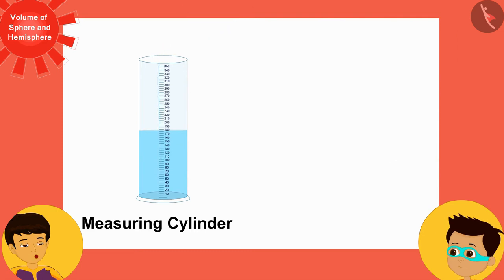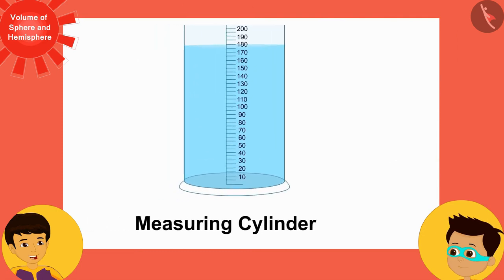Now can you tell me its volume? By carefully pouring the water filled in this container into this measuring cylinder, it's about 180 milliliters. All right.